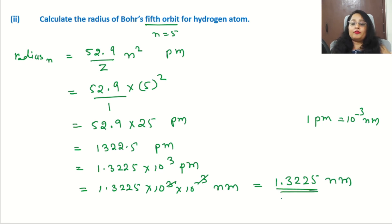This is the radius of the fifth orbit of hydrogen atom. That's all for today. Calculations are very easy, only need to remember the formula. Please like, share and subscribe the channel and be there with the next video. Till then, thank you.